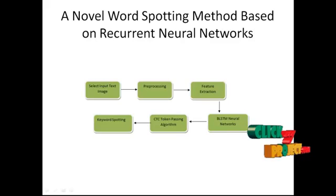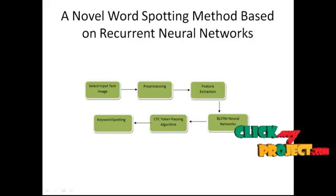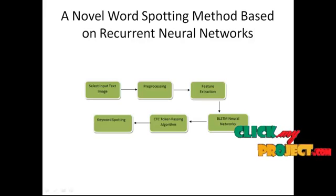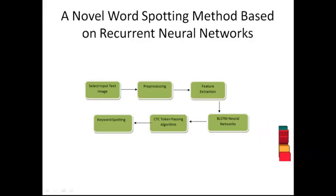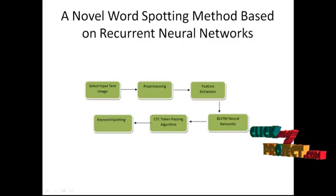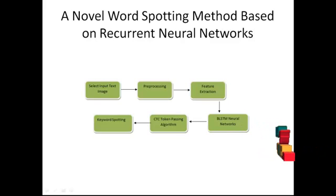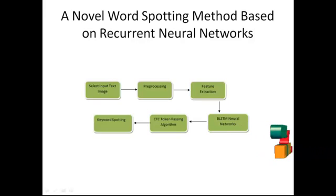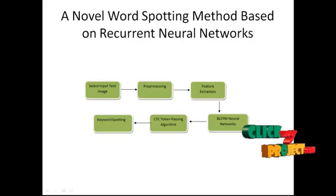The CTC token passing algorithm for single words expects a sequence of letter probabilities of length T as input from the neural network, together with a word W as a sequence of ASCII characters. In a dynamic programming fashion, the best path through the letter probability sequence is computed that corresponds with the letters from the input word W. The value of that path is then returned as a matching score, i.e., the probability that the input to the neural network was indeed the given word.